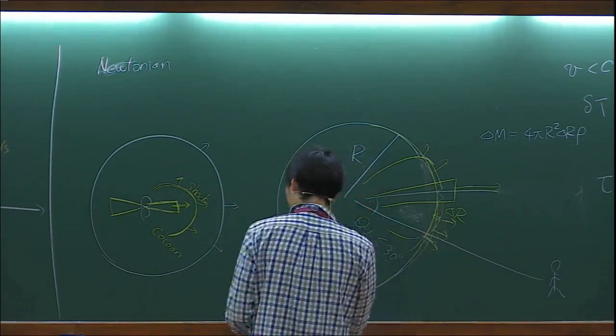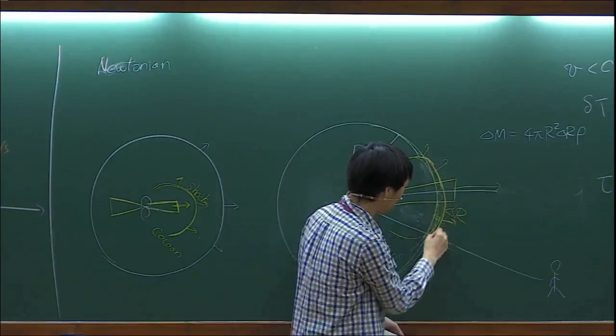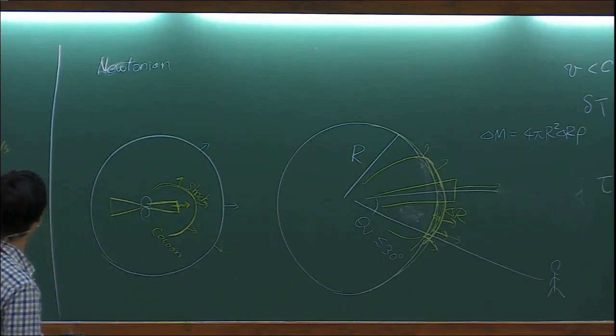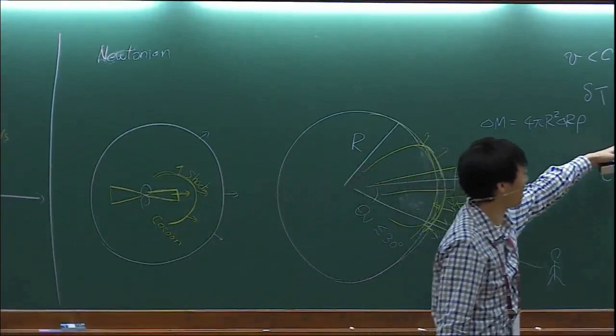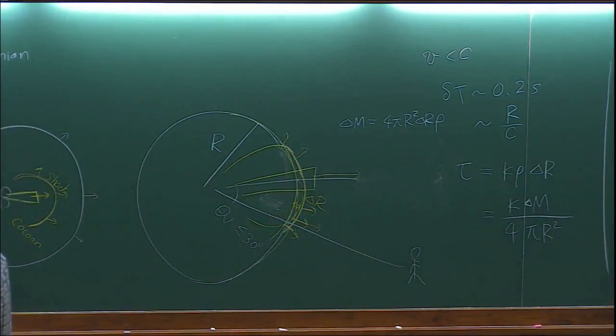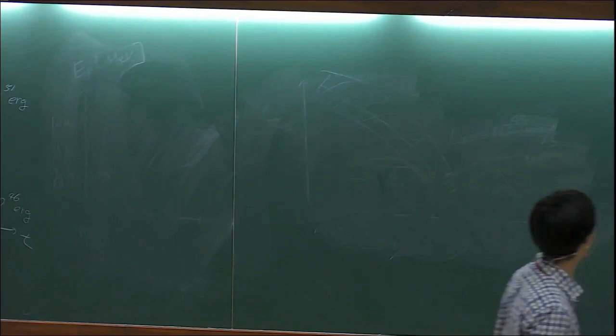Even though the ejector shell is non-relativistic, the shock velocity can be relativistic - the fluid motion of the shocked material can be relativistic. The delta-T calculation is actually not correct if you take into account the relativistic motion. So let's go to the relativistic calculation.